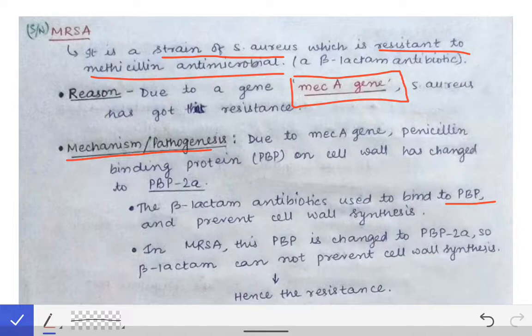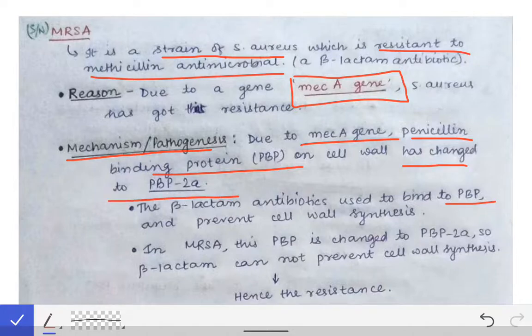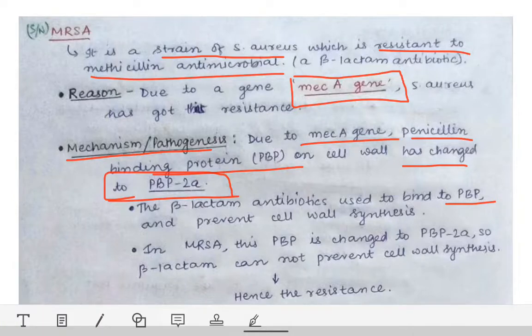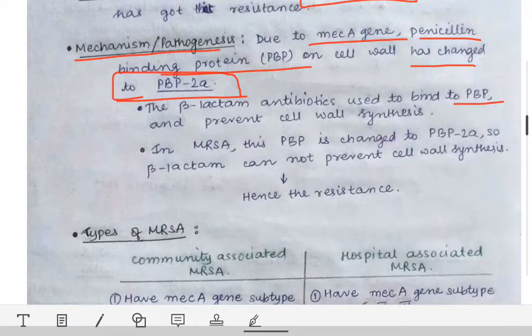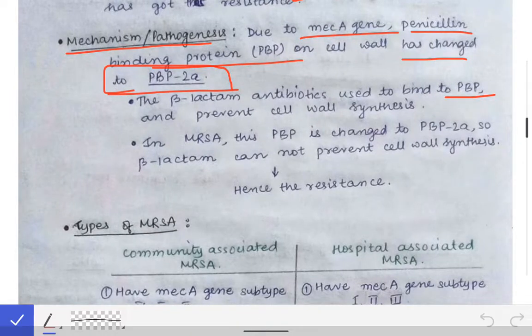In MRSA, due to the MEC-A gene, the penicillin binding protein is changed to the PBP2A form. Penicillin antibiotics cannot bind to PBP2A because they have a binding site for PBP, but it has changed to PBP2A. So they are unable to bind and therefore unable to kill this bacteria. This is the mechanism by which the MEC-A gene provides resistance.